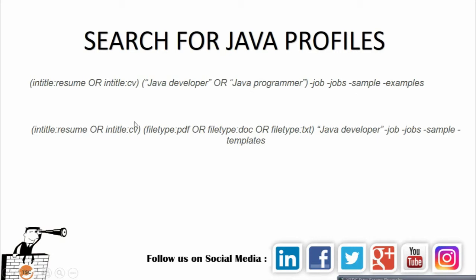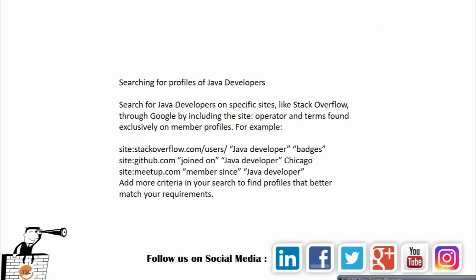We specifically define which type of file we're looking for — either PDF, DOC, or text. To use filetype, you have the optional filetype:pdf or filetype:doc; you can also use docx, as people use that as well. Here you define java developer in quotations and you remove job, sample, and templates from the results.